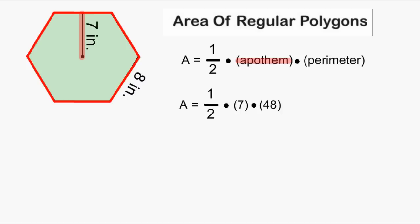After substituting the length of your apothem and the perimeter of your regular polygon into your formula, multiply those two numbers together. In this case, that product would give us 336.